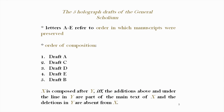The letters A to E refer to the order in which these manuscripts have been preserved. The order of composition is a different matter. I have tried to order the five holograph drafts of the General Scholium, and in this context I have based myself on the following principle: X is composed after Y if and only if the additions above and under the line in Y are part of the main text of X, and the deletions in Y are absent from X. If you apply this principle to the five drafts, it turns out that draft A was composed as the first draft, C as the second, D as the third, E as the fourth, and B as the fifth.